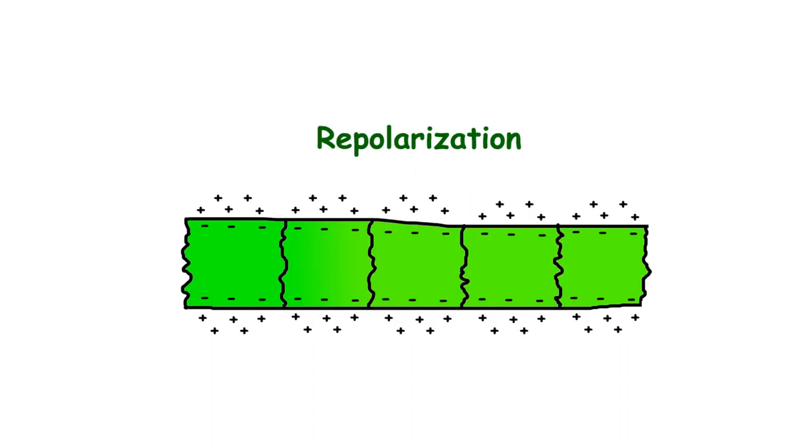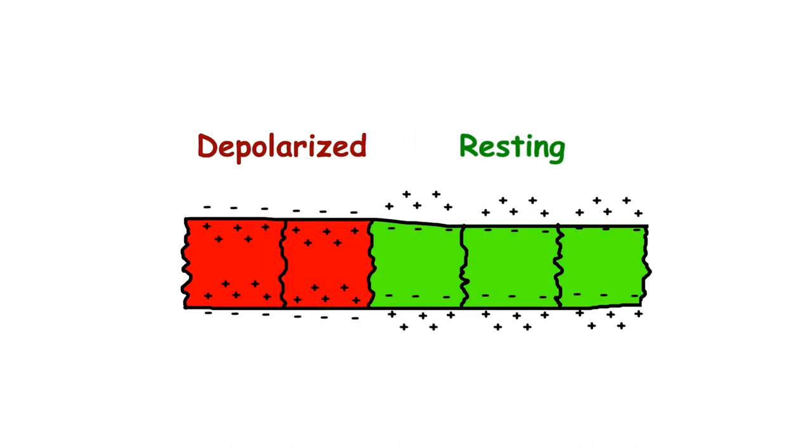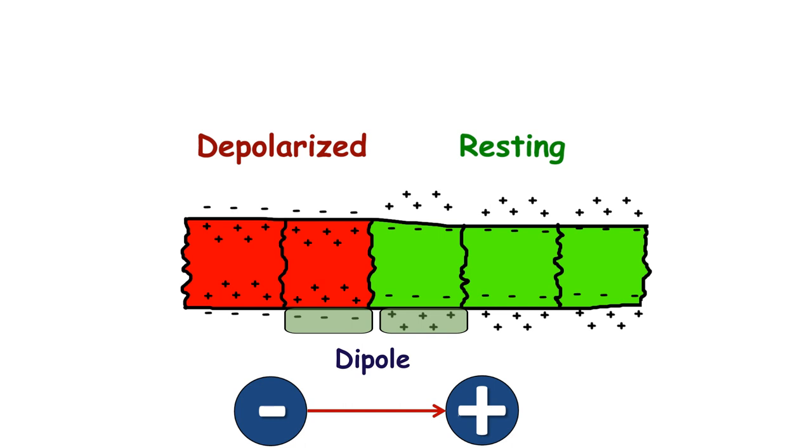During repolarization cells get negative charge again. During the conduction of depolarization wave, there are cells that are already depolarized and cells that are not yet depolarized. There is a difference of charge across this set of cells. We can think about this as being a dipole. It may be marked as a vector that is directed from a negative charge to a positive one.